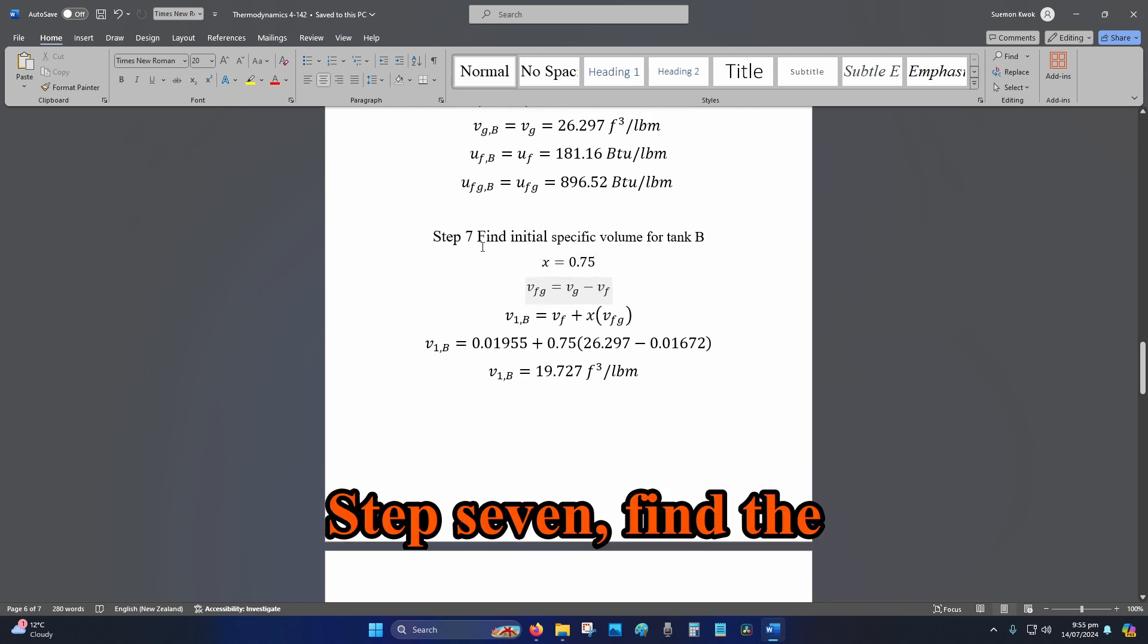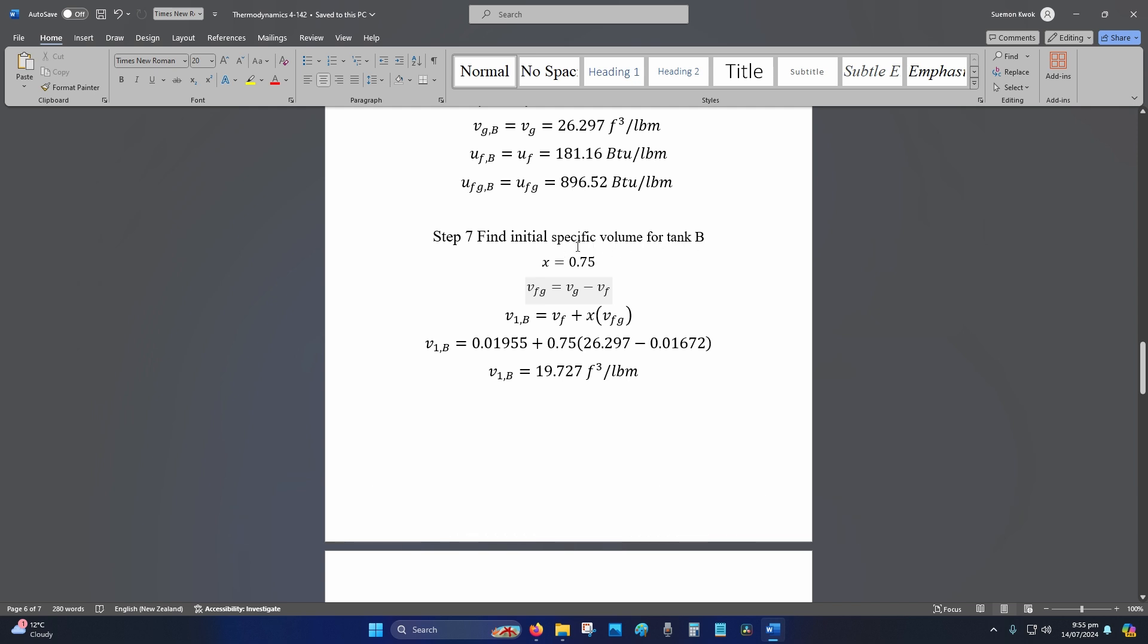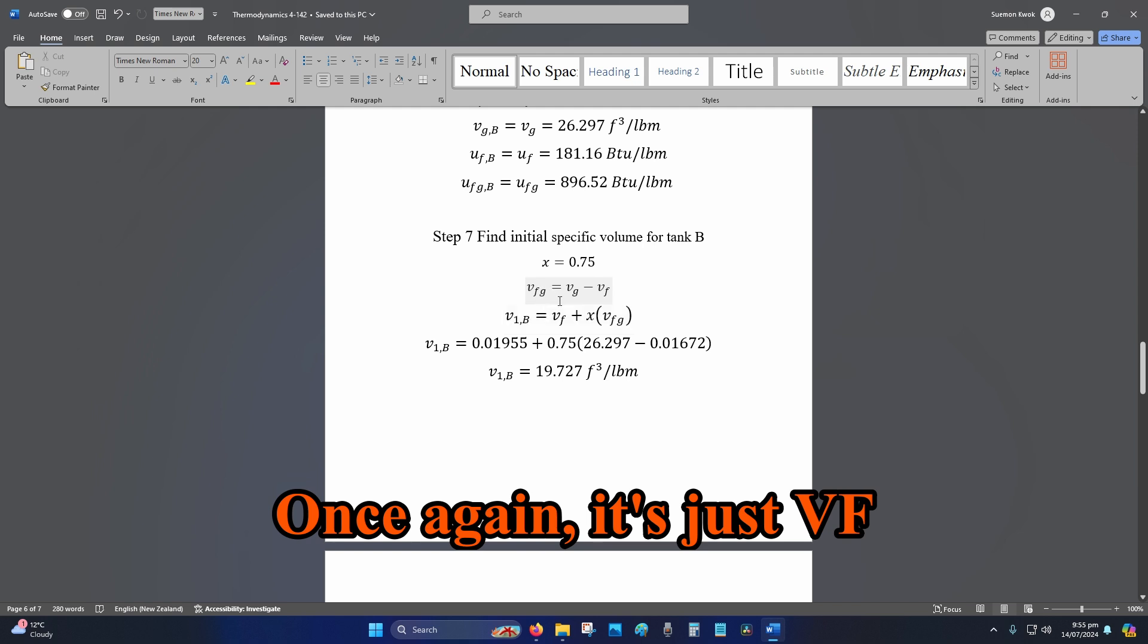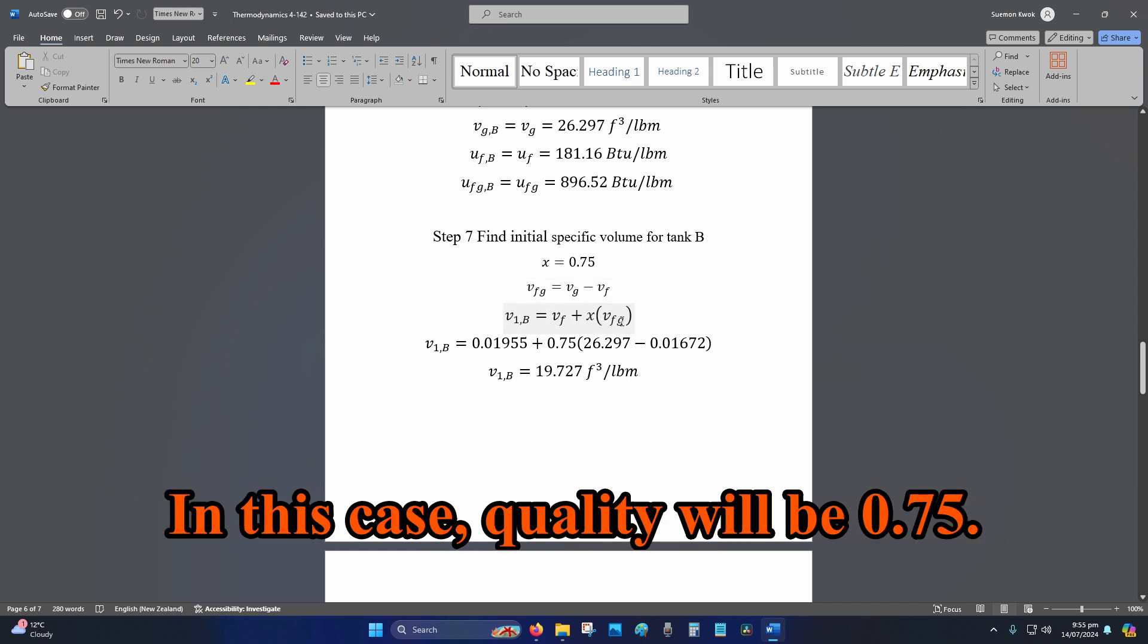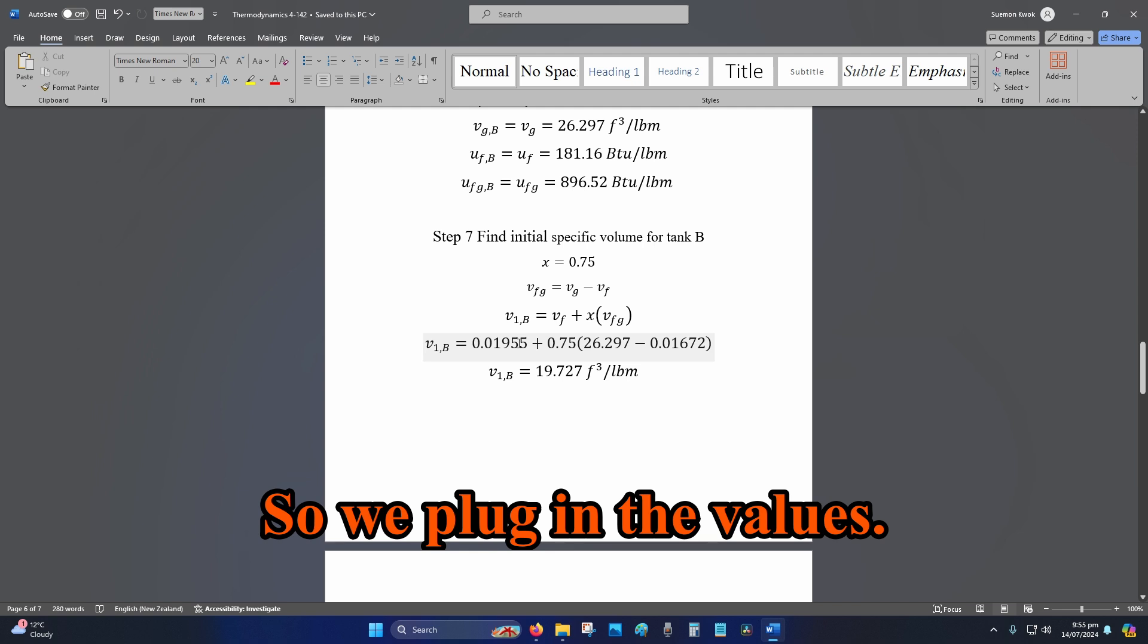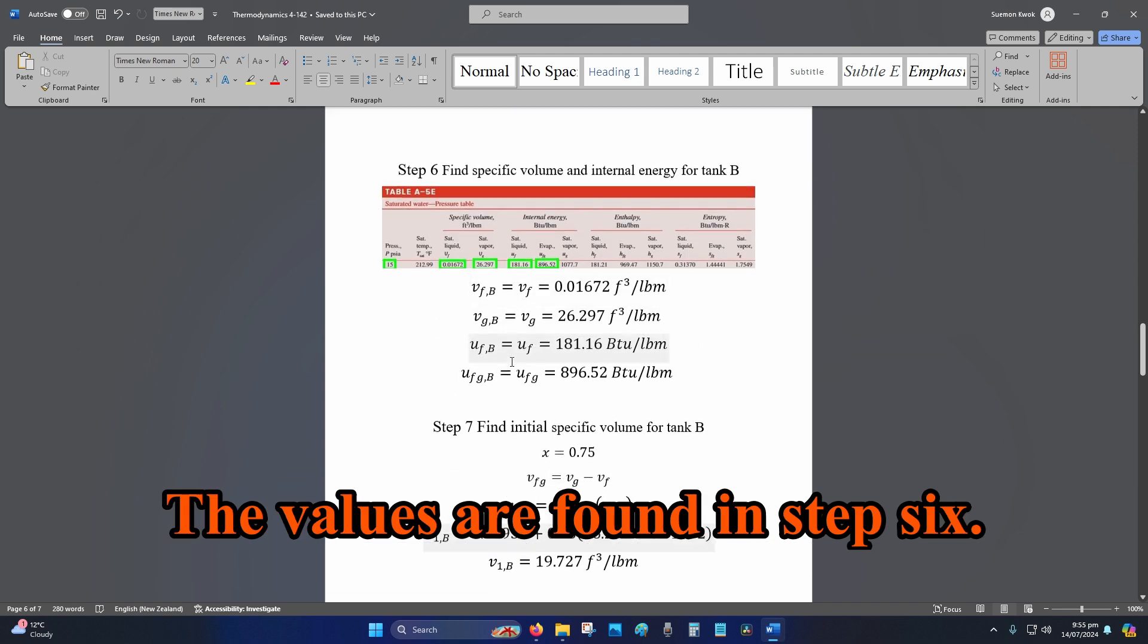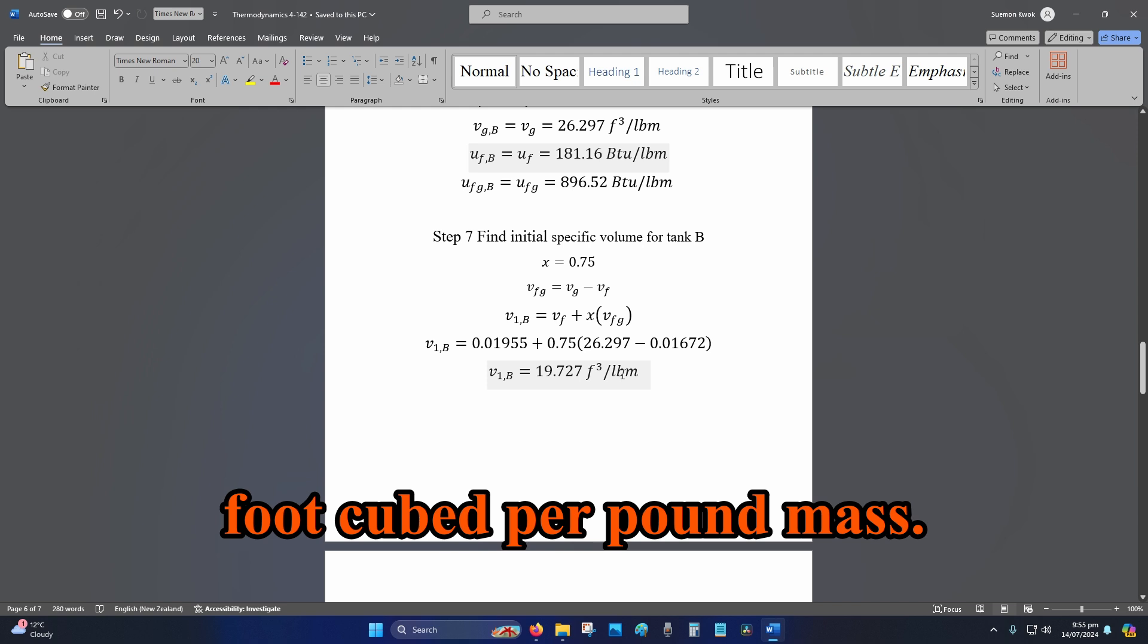Step 7, find the specific volume for tank B. Once again, it's just VF plus quality multiplied by VFG. In this case, quality will be 0.75. So, we plug in the values. The values are found in step 6. Our V1B is equal to 19.727 foot cubed per pound mass.